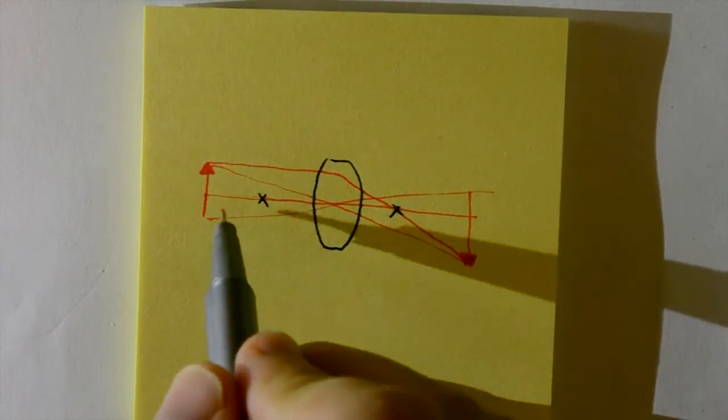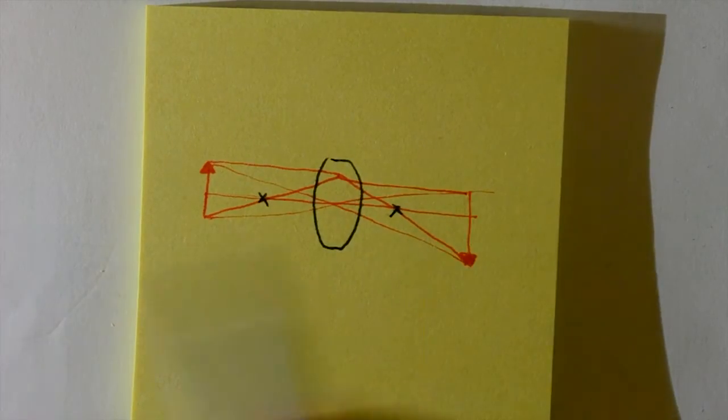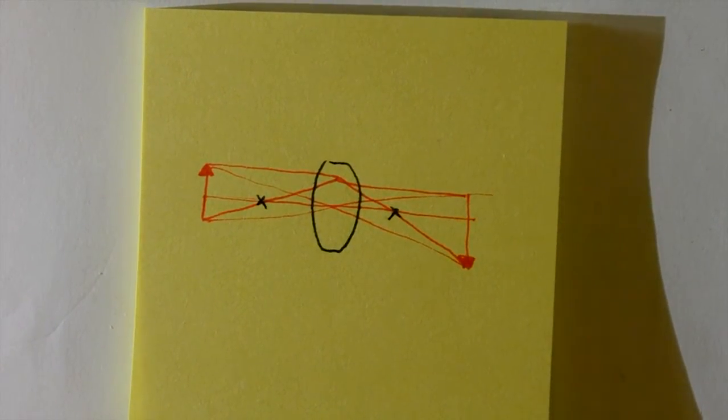There is also a third type of line you can add, and that is any line that passes through the focal point on the left side of the lens, then travels parallel to the ground on the right side of the lens.